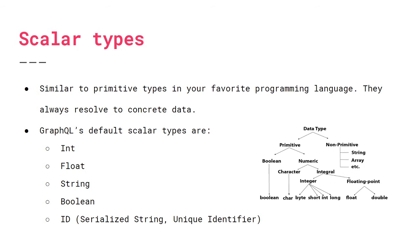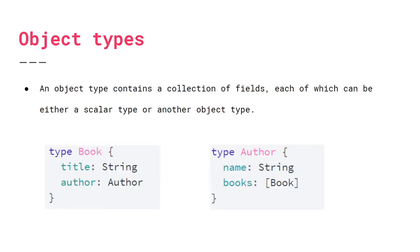So what is a scalar type? Similar to primitive types in common programming languages like Java — for instance Boolean, integer, characters — GraphQL's default scalar types are pretty similar. They are int, float, string, Boolean, and ID, which is a unique identifier. And all these resolve to concrete data all the time.